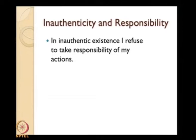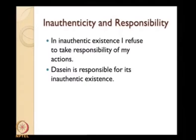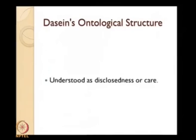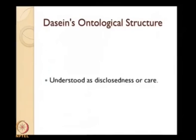In inauthentic existence I refuse to take responsibility for my actions, and Dasein is responsible for its inauthentic existence as well. In inauthenticity I do not take responsibility because I am part of the they — I am the they-self. But when I am myself, I have to take responsibility; the decisions are mine. My inauthentic being is also owned by me.